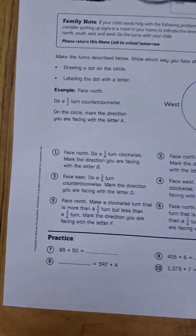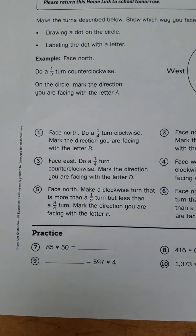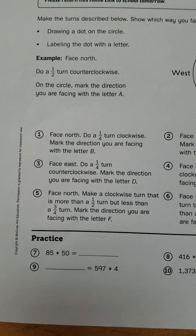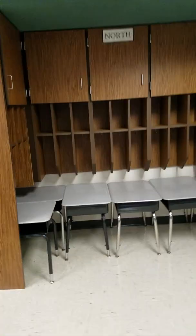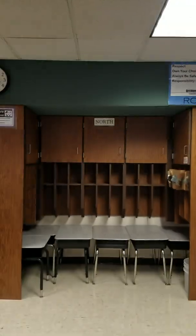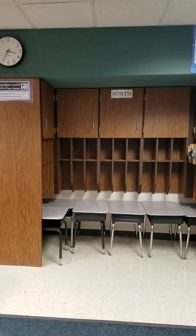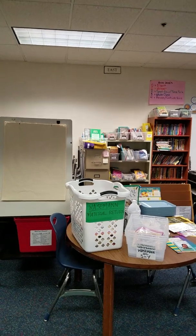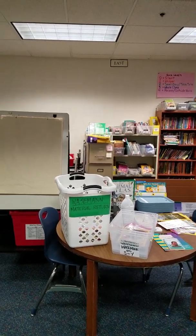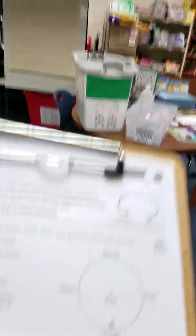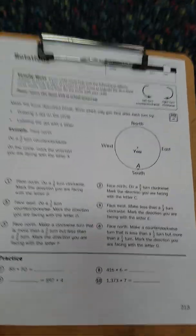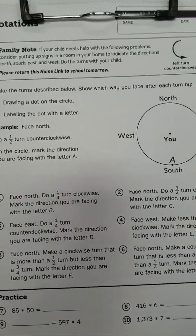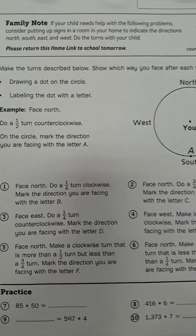Problem number one says face north and do a quarter turn clockwise, mark the direction you are facing with the letter B. So I'm going to go into the center like the diagram shows, there's north and I'm going to make a quarter turn so that means I'm going to turn 90 degrees. I've turned one quarter of the way around and as you can see I'm now facing east. So what I would do is I'm going to mark a quarter turn clockwise with the letter B so I'm going to put a dot right here and the letter B like so.